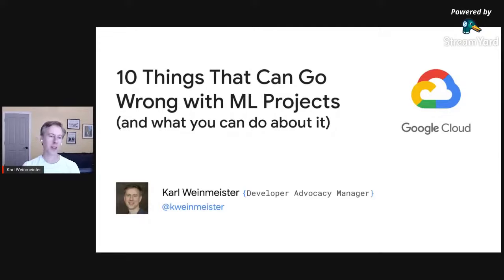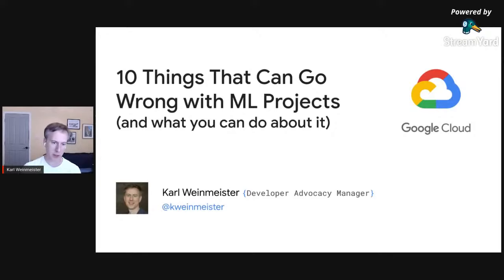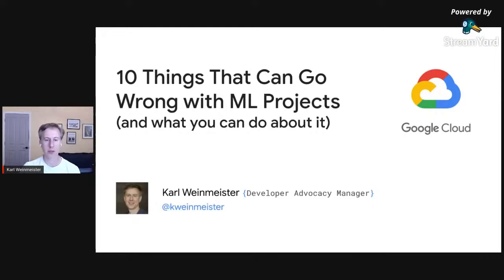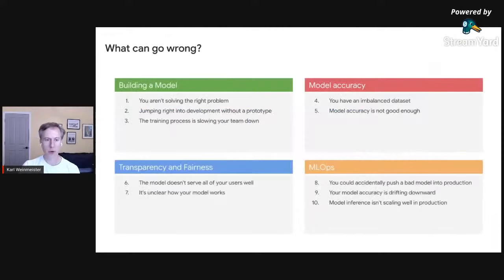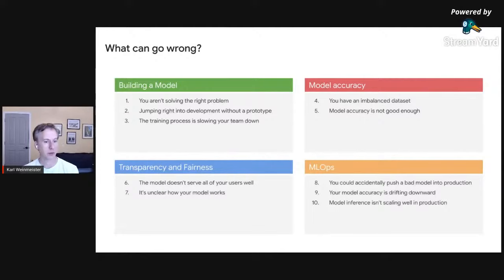There are, of course, more than 10 things, but I wanted to pick 10 that I have personally run into and think are critical. We're not just going to talk about what can go wrong — we're going to look at some solutions, either through best practices or tools that can help. These issues fall into a few buckets: building the model, getting to the right level of accuracy, transparency and fairness, and putting the model into production with MLOps.